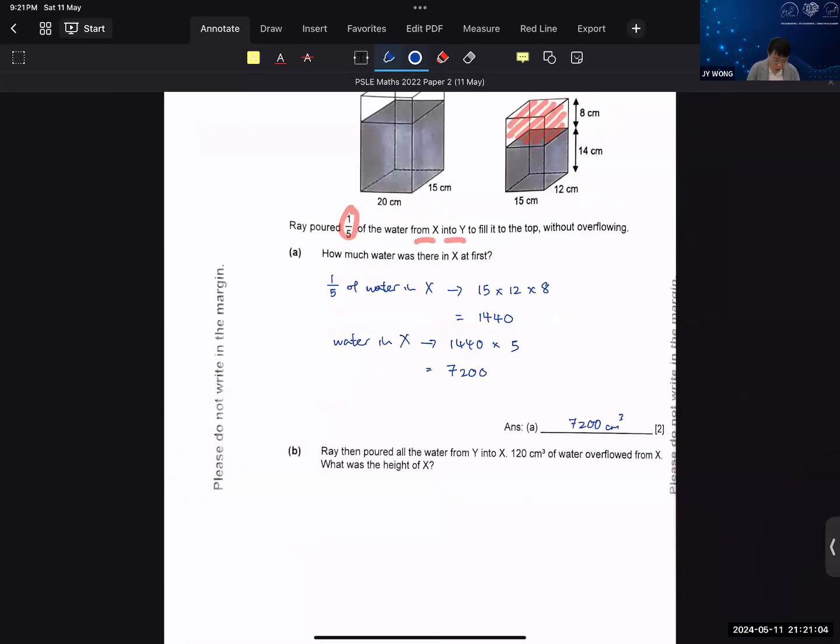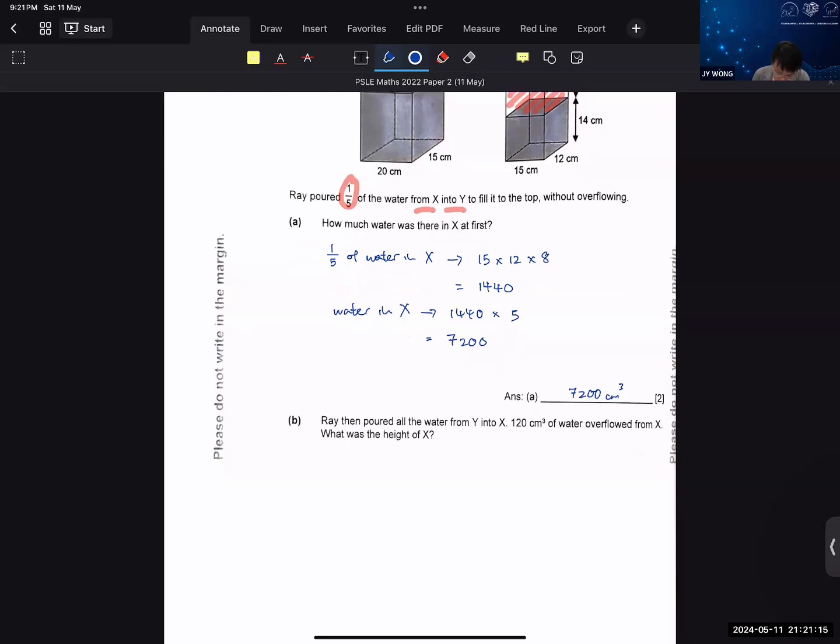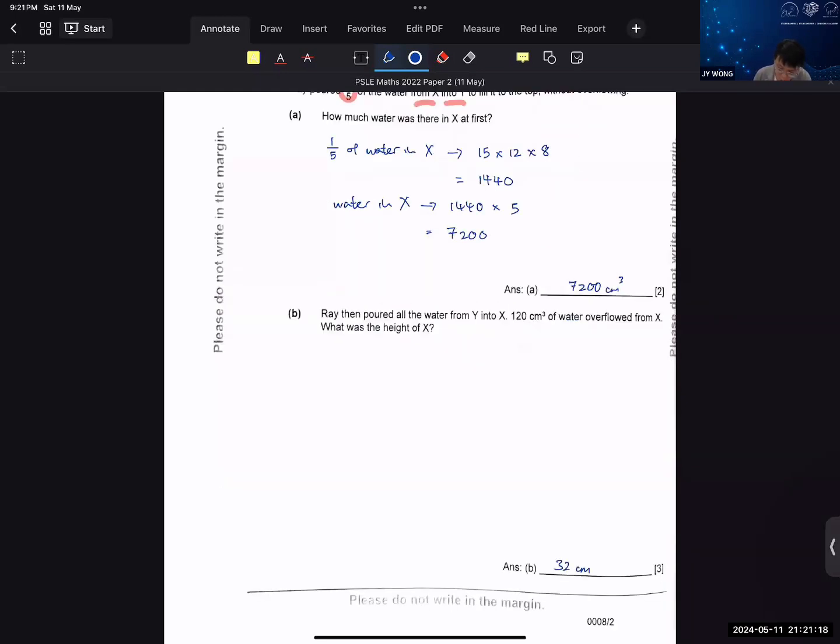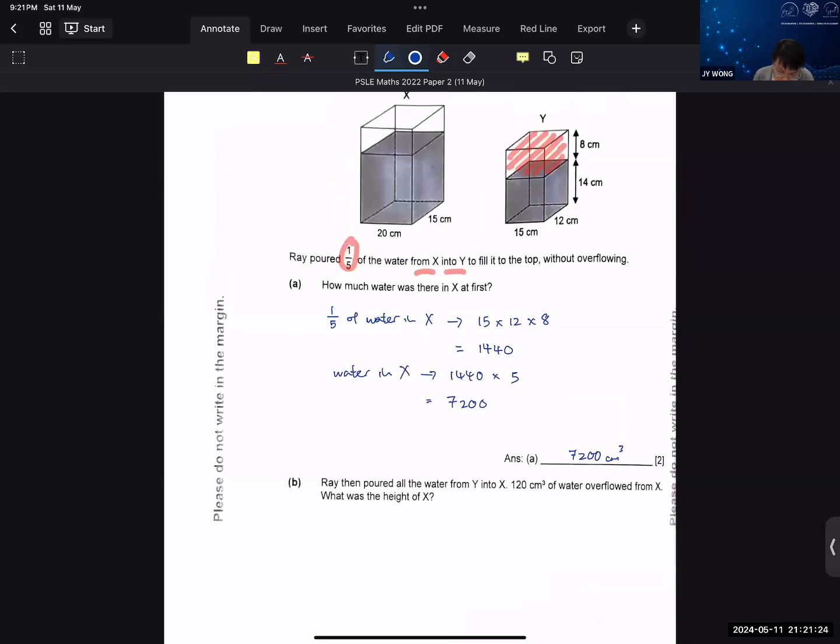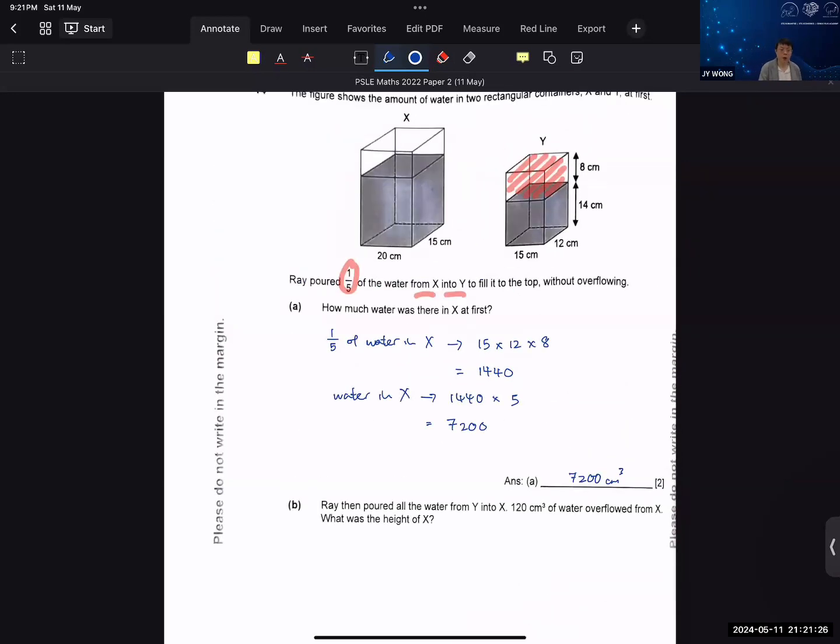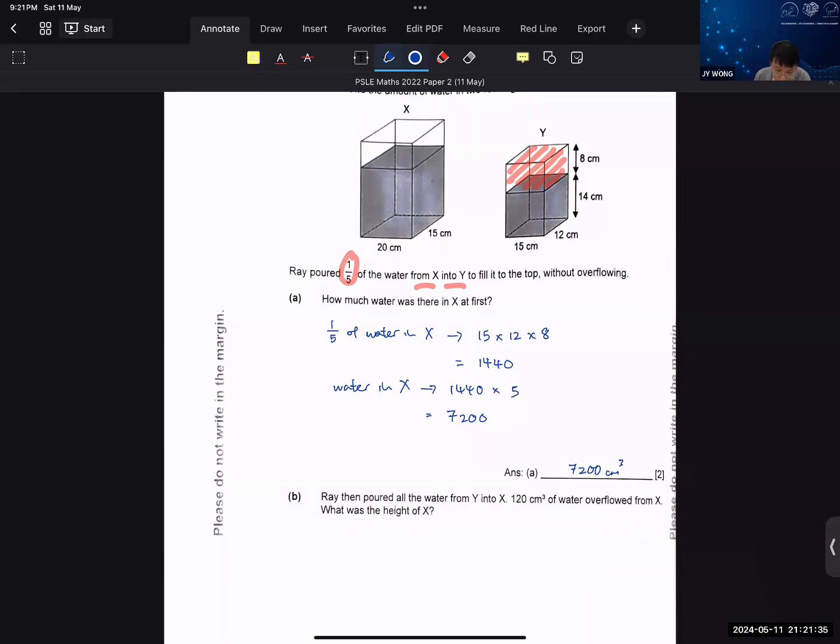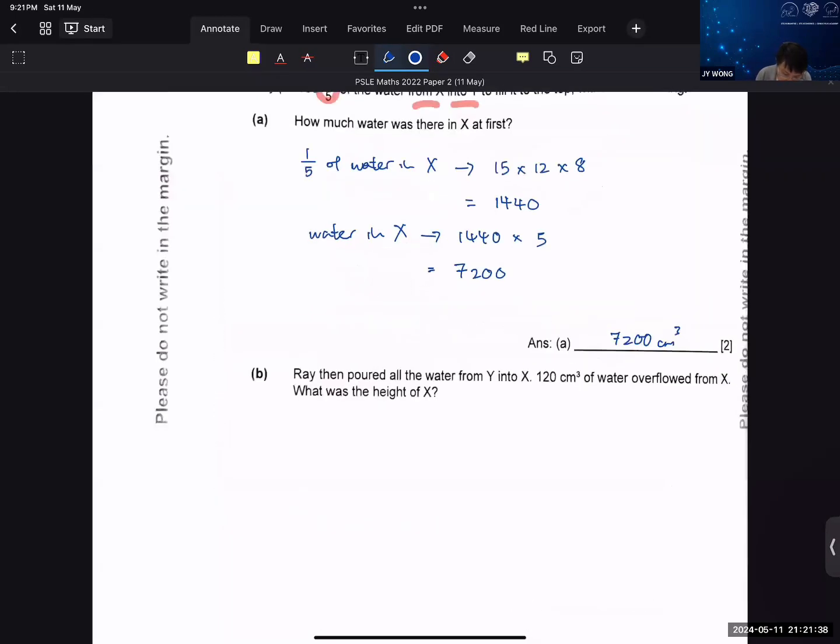Ray then pour all the water from Y into X and 120 cm³ of water overflow. This is 32 cm. Now, number one, understand that the amount of water in the tank did not change. The amount of water in the two tanks, rather, did not change, the total amount. So you just go ahead and find what is the total amount of water first. You already found the water in X. So you find water in Y at first.